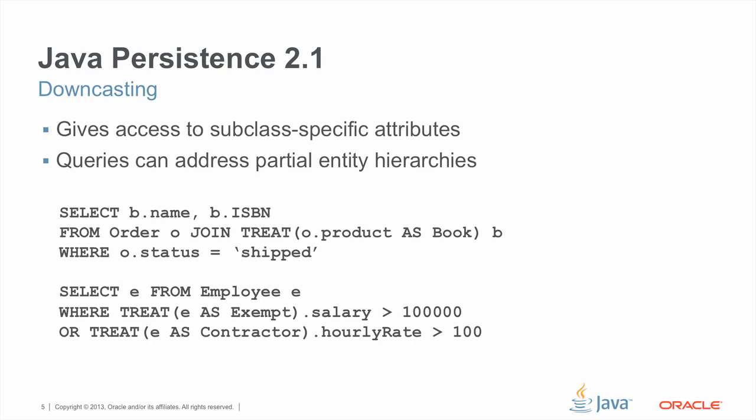Downcasting is a very useful feature because it gives you access to subclass specific attributes in queries, particularly where you have a polymorphic relationship between two types, and in the target of the relationship you want to access the subtype and subtype specific attributes. The treat operator serves both for the purpose of filtering on the results as well as for downcasting. In the first example here, the relationship at the type level is between orders and products, where books are a subtype of product. In our query, we want to filter out those products that are books and access book specific state. So the treat operator serves both purposes — it filters and downcasts — allowing us to access the book name and the ISBN.